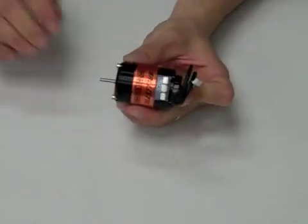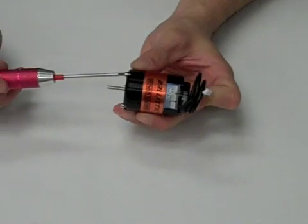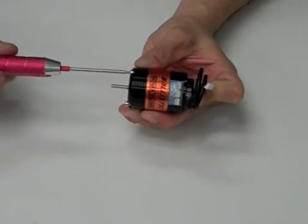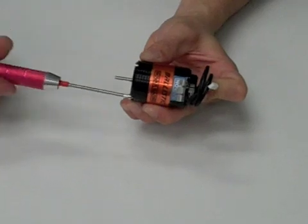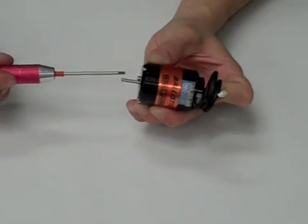Press the screws completely into the motor and begin tightening them. Do not tighten the screws completely yet. Go around, snug them up one at a time, and come back to tighten them a final time.